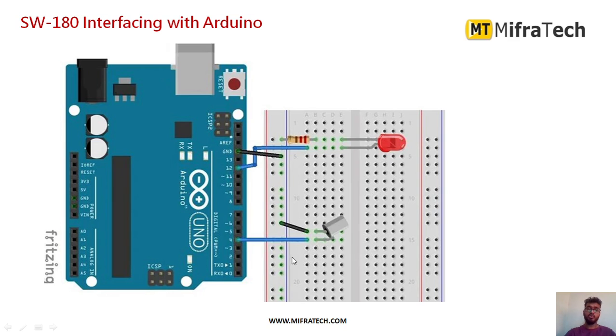Whenever it is detecting the tilt or any inclination or orientation, I'm indicating that using an LED. So I am connecting the LED to pin number 12 of Arduino Uno microcontroller through a resistor and grounding it, as you can see here. This is a simple connection to interface the tilt sensor.